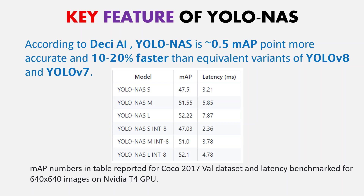YOLO NAS L INT8 has a mean average precision of 52.1% but is less fast compared to other YOLO NAS models, with a latency of 4.78 milliseconds. The mean average precision numbers in the table are reported from the COCO 2017 validation dataset, and the latency benchmark for 640x640 images is done on an NVIDIA T4 GPU.